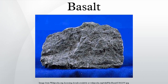High alumina basalt may be silica under-saturated or over-saturated. It has greater than 17% alumina and is intermediate in composition between tholeiite and alkali basalt. The relatively alumina-rich composition is based on rocks without phenocrysts of plagioclase.